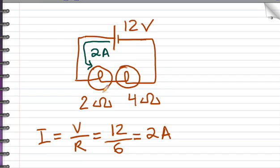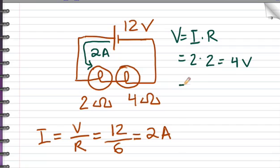Now if I want to calculate the individual voltages, I'll do voltage equals current times resistance. For the 2 ohm, I'll do current 2 times resistance 2 equals 4 volts. For the 4 ohm bulb, I'll do current 2 times resistance 4 equals 8 volts. The total adds to 12.